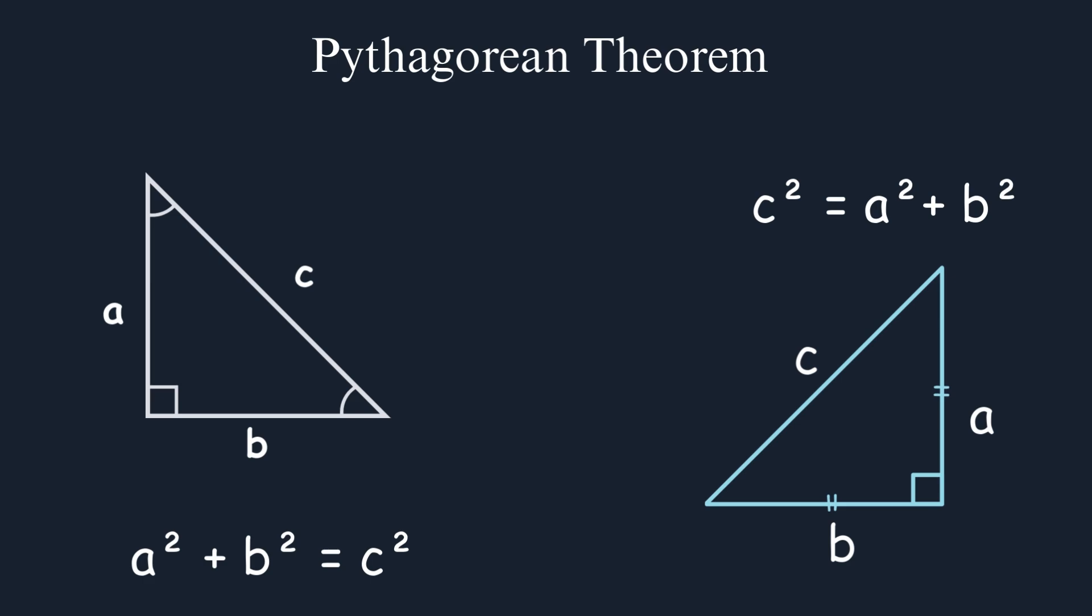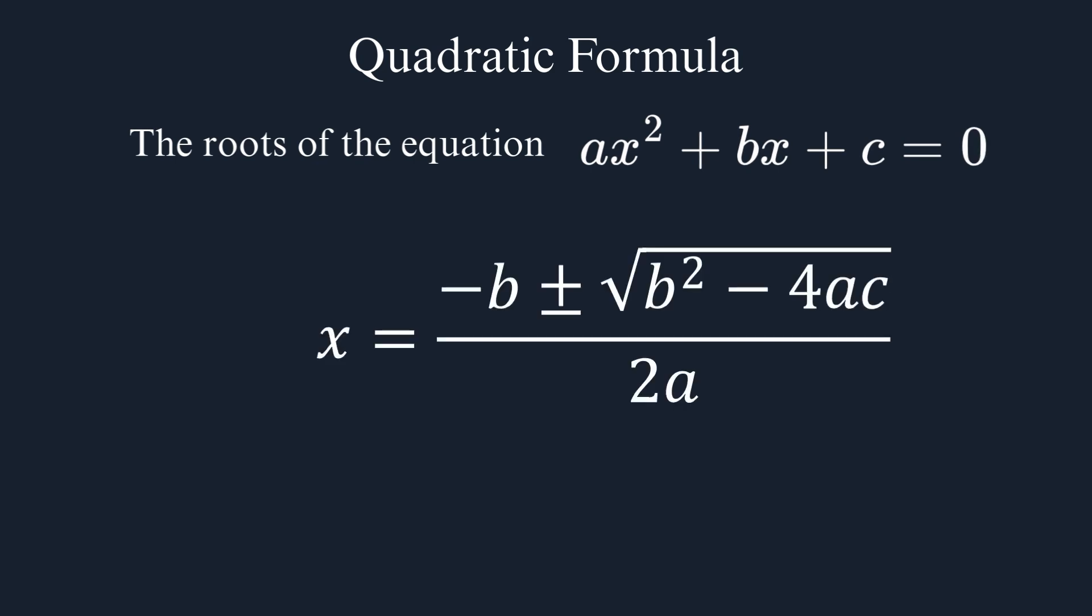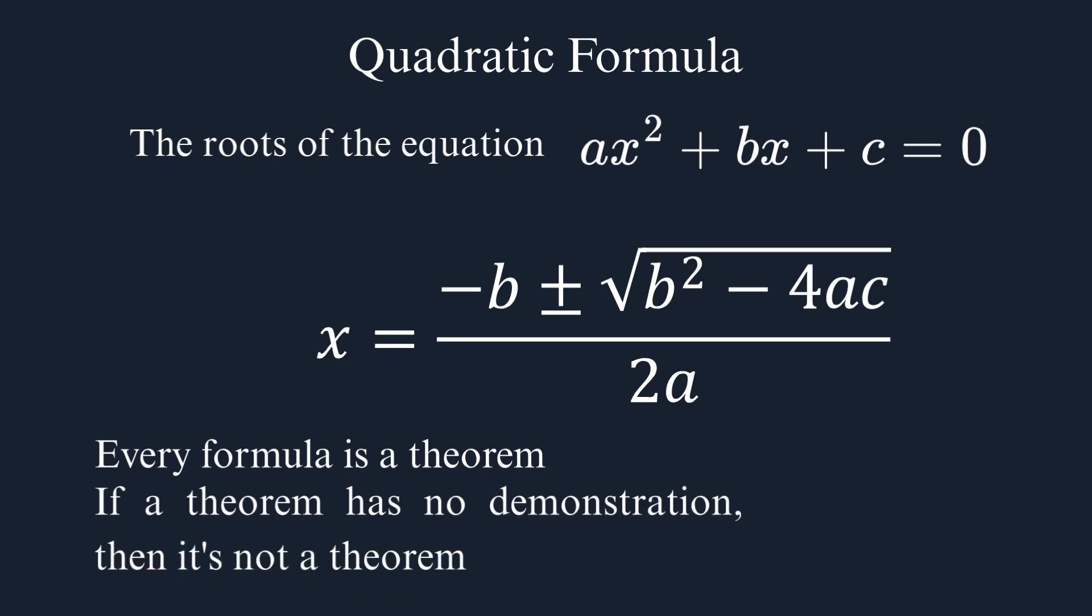Within mathematics, we use the expression if and only if to exemplify this idea, the well-known quadratic formula. It says that the roots of the equation a times x squared plus b times x plus c equals zero are given by this formula. Every formula is a theorem because it's a result obtained through deduction and mathematical demonstration. Every theorem must be proven. If a theorem has no demonstration, then it's not a theorem, and it must be a formal demonstration using logic. Intuition doesn't count.